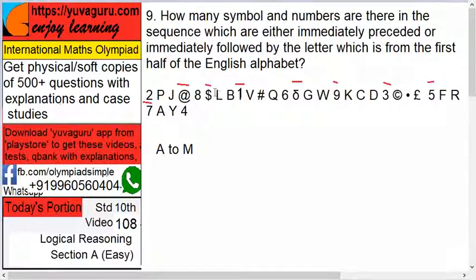So I have marked this. See, this at the rate is followed by and follows J, so J is between A to M. Then dollar sign, this is followed by L, so that is again between it.